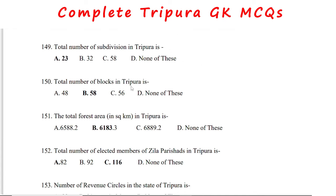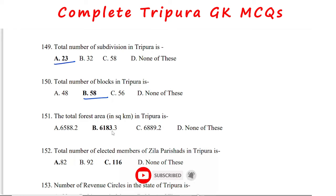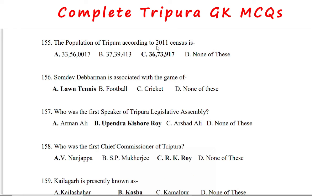Total number of blocks in Tripura is 58, subdivisions is 23, and total forest area is 6183.3 square kilometers. The population of Tripura according to the 2011 census is 36,73,917. Shomdev Dev Barman is associated with the game of lawn tennis. The first Speaker of Tripura Legislative Assembly was Upendra Kishor.